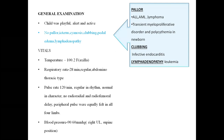Examination: child was playful, alert, active. No pallor, icterus, cyanosis, clubbing, pedal edema, lymphadenopathy. Pallor is important — Down syndrome children are more prone to AML and lymphomas; in the newborn period they may have polycythemia and transient myeloproliferative disorder. Clubbing to rule out infective endocarditis, cyanosis to rule out cyanotic heart disease, lymphadenopathy to rule out leukemia. Vitals: temperature, respiratory rate 28/min regular, abdominal-thoracic type, pulse rate with rhythm all noted. Blood pressure normal at 90/60 mmHg. All peripheral pulses should be checked given congenital heart disease.